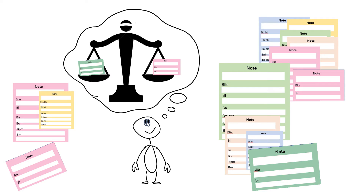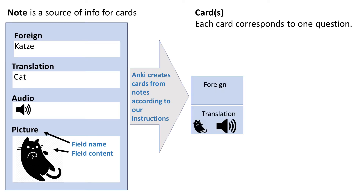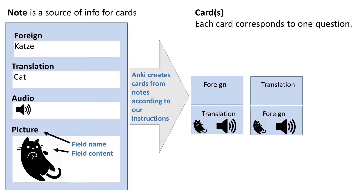The first awesome note is the three card note. The first card has a foreign word at the front and a translation at the back, which is also accompanied by a picture and pronunciation. The second card has the translation at the front and the other fields at the back: the foreign word, picture, and pronunciation.